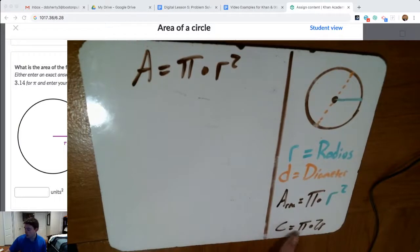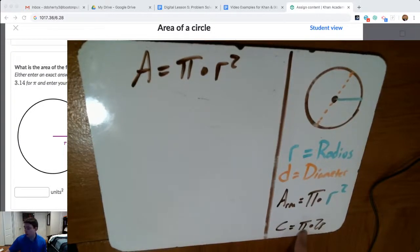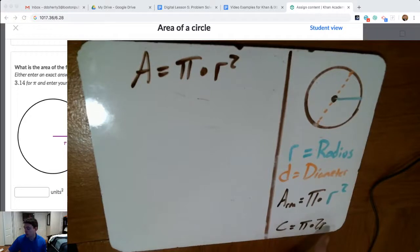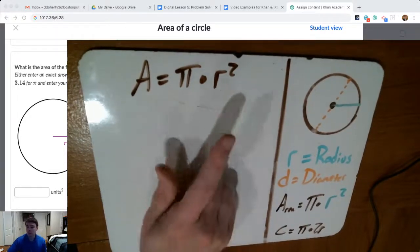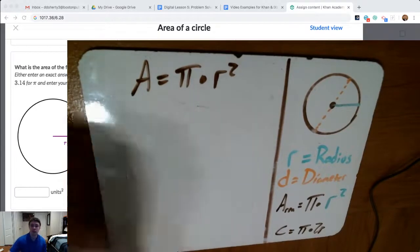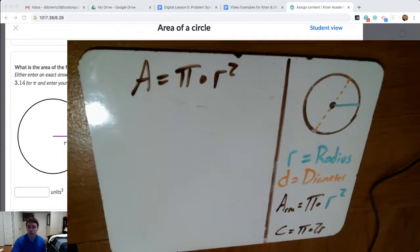Later on, we'll touch again on the formula for circumference. Circumference is always equal to 2 times the radius, or the diameter, multiplied by pi, and that can help us also if we're given a circumference to be able to find radius and work out the area. So as we see with this formula, if we want to find the area of a circle, the big key is to know what is the radius for that circle.